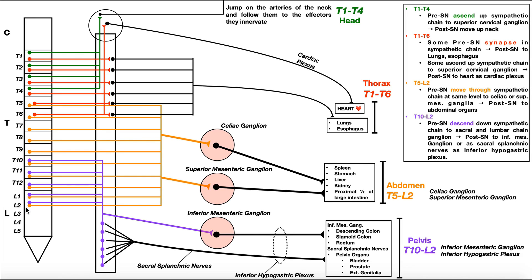We have regions the sympathetic nervous system travels to that are higher up than T1 or lower down than L2. The way those neurons get there is they're going to enter structures and either descend downward or ascend upward. Now let's dissect the four major components of the sympathetic nervous system.